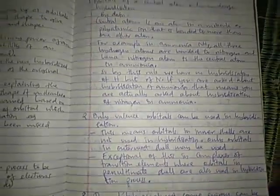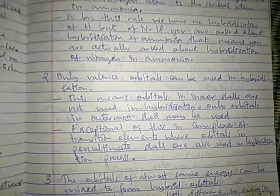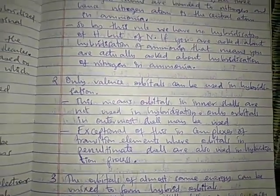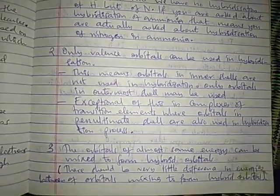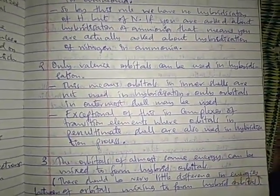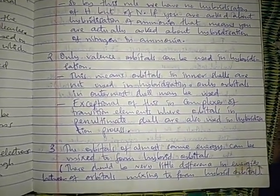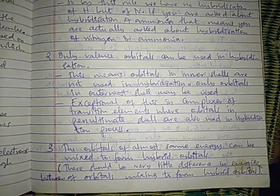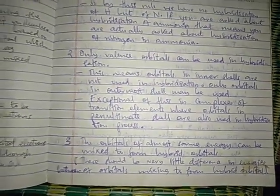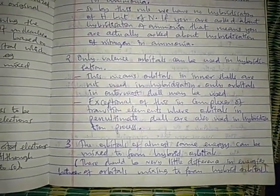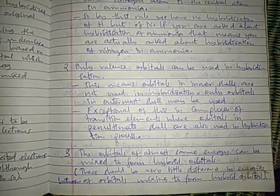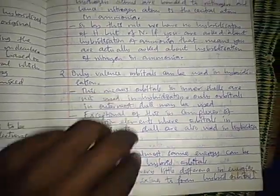The second principle is that only valence orbitals can be used in hybridization — inner shells are not used. For example, if an atom has three shells, only the third shell can be used in hybridization. The third principle is that only orbitals of almost the same energy can be mixed to form hybridized orbitals. There should be very little difference in energy between the orbitals being mixed. For example, mixing s and p orbitals, or sp and d orbitals, is possible because they have very small differences in energy.